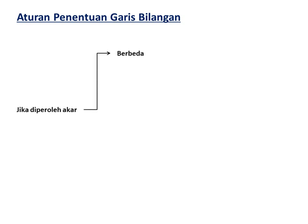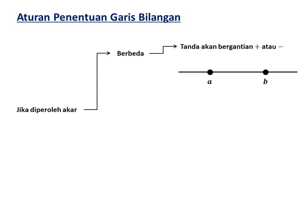Aturan penentuan garis bilangan: ketika kita sudah memperoleh akar, baik dengan cara pemfaktoran ataupun rumus ABC, jika kedua akarnya berbeda, maka tanda pada garis bilangan akan bergantian positif atau negatif — selang-seling. Kalau kita punya akar A dan B, maka tandanya bisa positif, negatif, positif, atau negatif, positif, negatif.